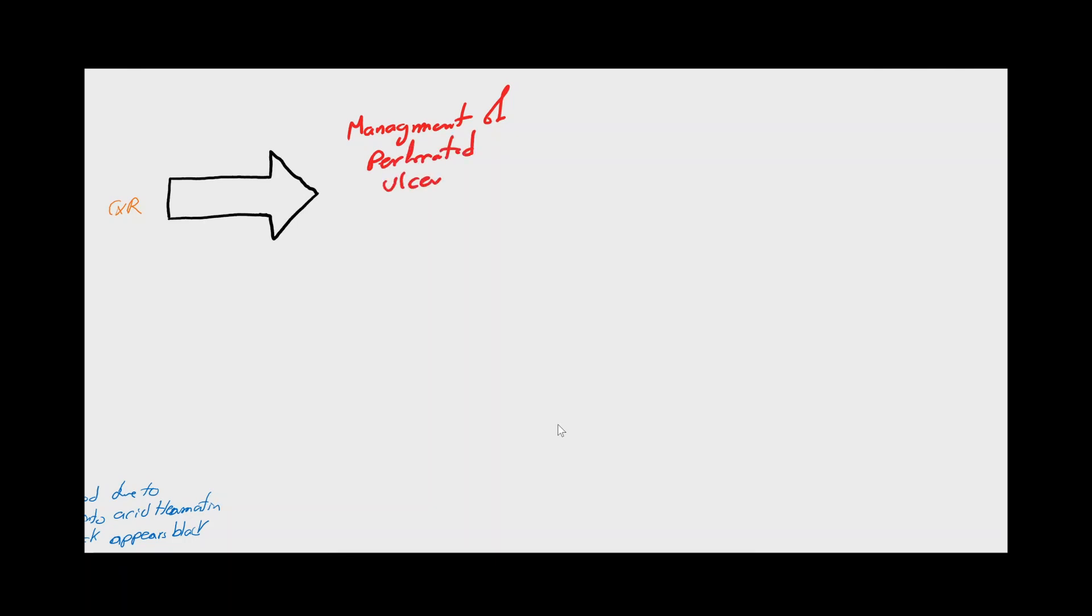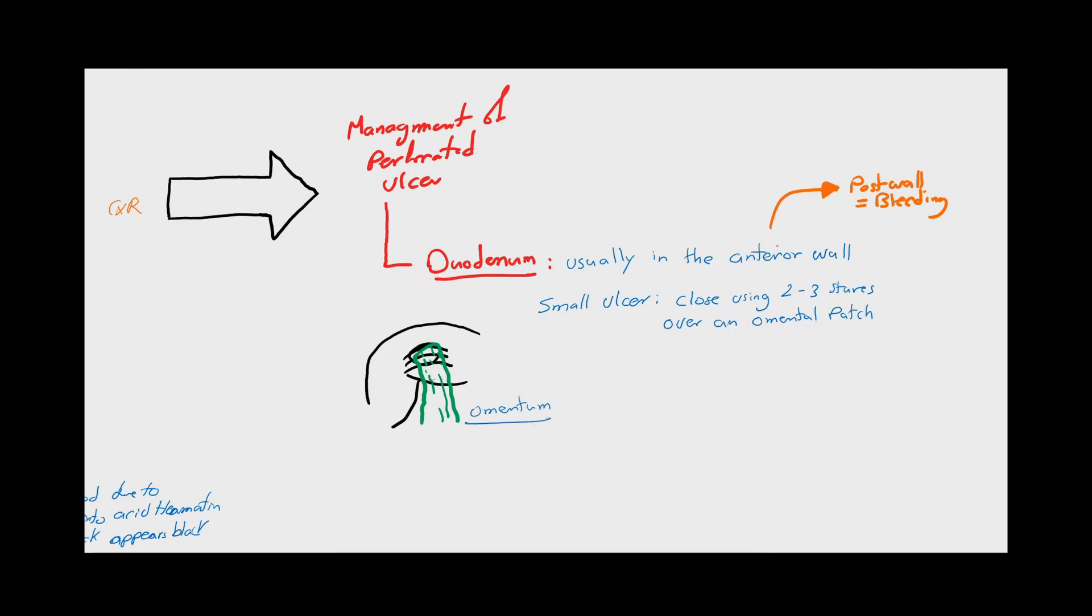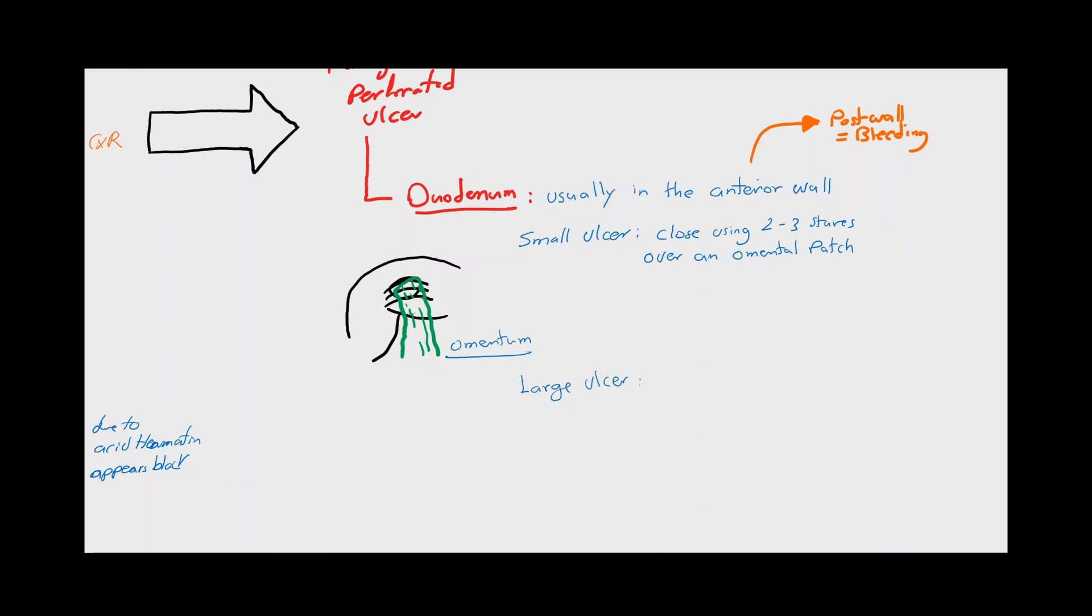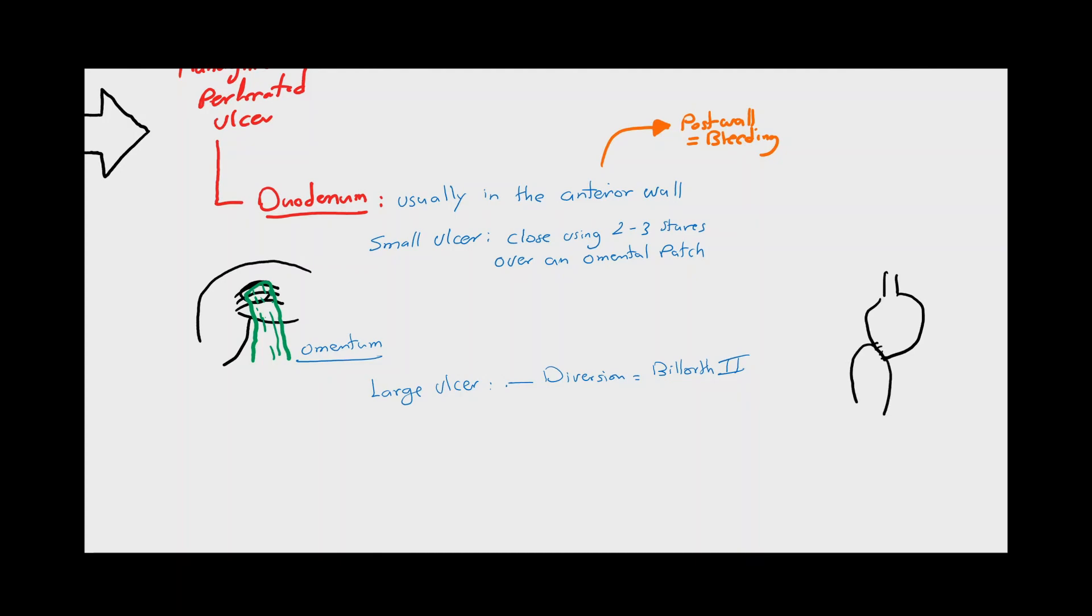Now we will move to the management of a perforated peptic ulcer. The first part of the duodenum is a common site for perforated peptic ulcer. Usually the ulcer is on the anterior wall of the first part of the duodenum. If it is a small ulcer, less than 2 cm, the treatment of choice is closing the perforation with two or three sutures over an omental patch. Less common is the perforation of the posterior wall of the duodenum, in which massive bleeding is added due to erosion of the gastroduodenal artery. A large ulcer, more than 2 cm, is treated with two options. The first option is diversion of the gastric juice away from the duodenum and performing a Billroth 2 gastrectomy.